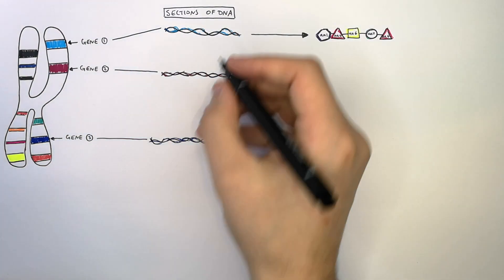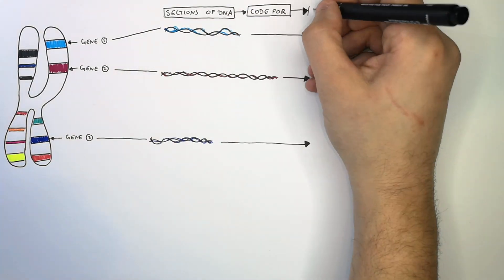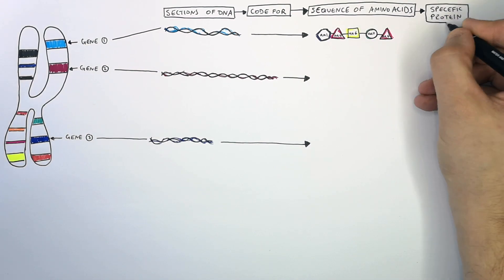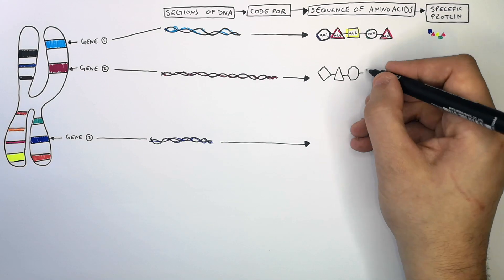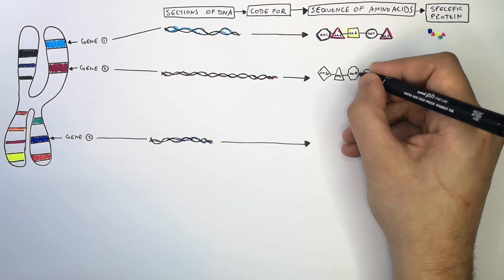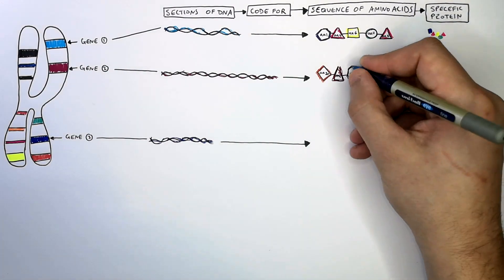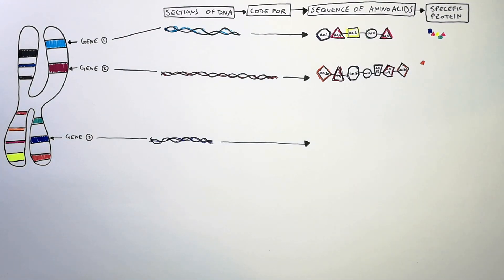As you can see of gene 1, whereby this section of DNA, the gene, codes for a specific sequence of amino acids that forms a specific protein. And the longer section of DNA of gene 2 is going to code for a specific sequence of amino acids that will be longer than the amino acid sequence of gene 1. This will then produce a protein with a different shape to gene 1's protein.